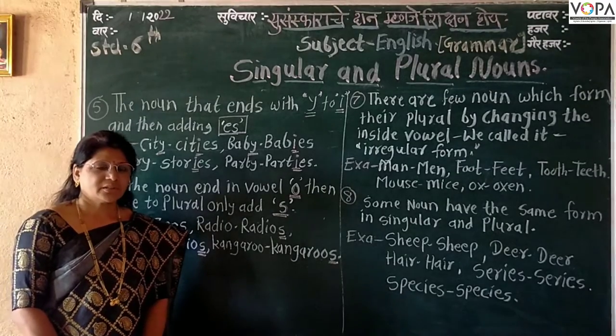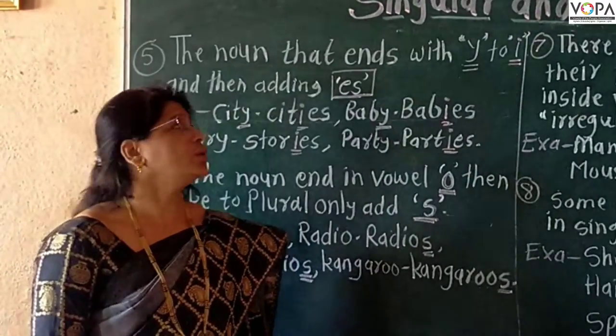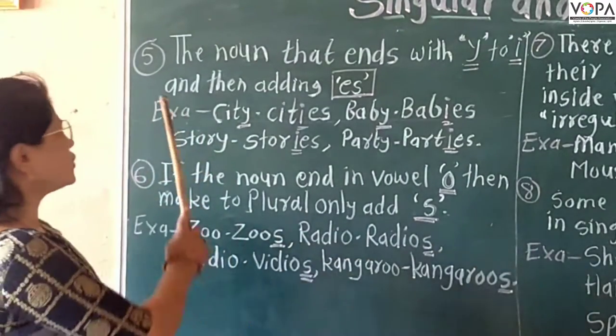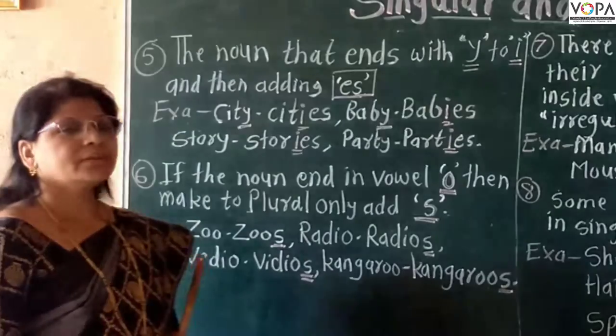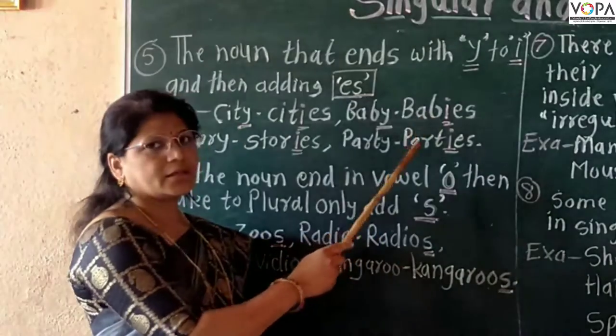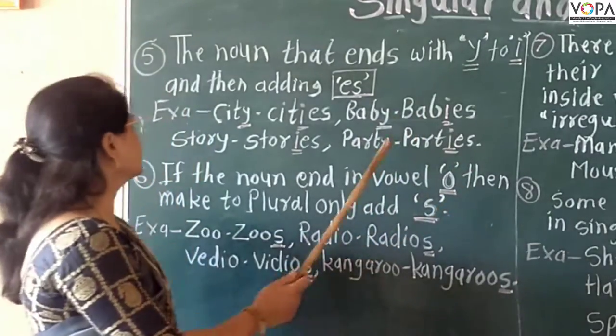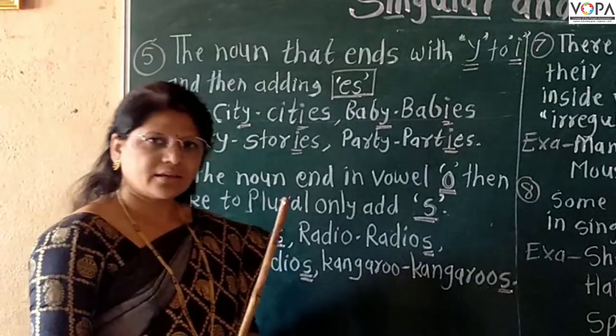Hello dear students. Now let's see rule number 5. The noun that ends with the letter y — remove the y and add -ies.